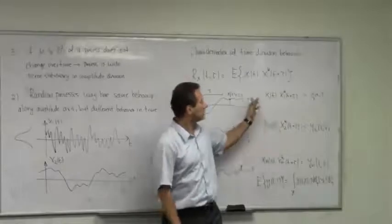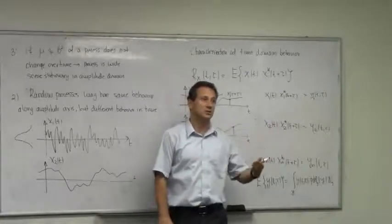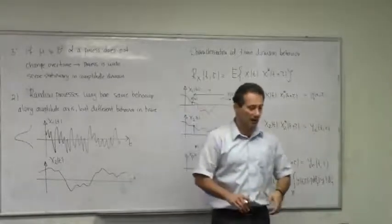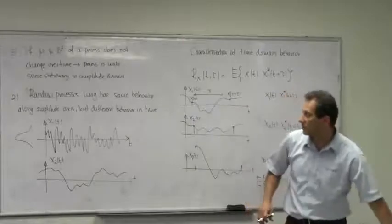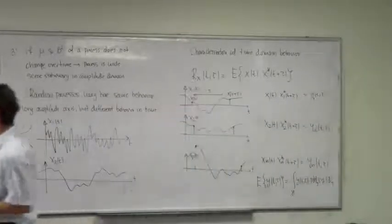No matter where I start looking at the autocorrelation I'm going to get the same values as a function of τ. The process is stationary. If the autocorrelation function changes as a function of t, the process is non-stationary. We're talking about time domain now. If r(t, τ) depends only on τ, the process is stationary in the time domain.